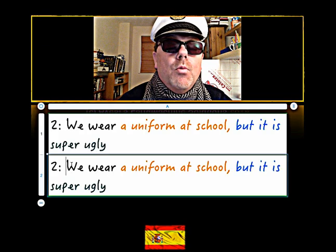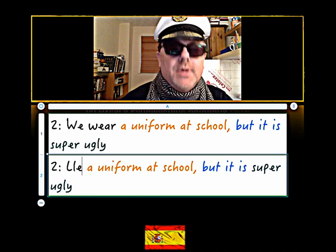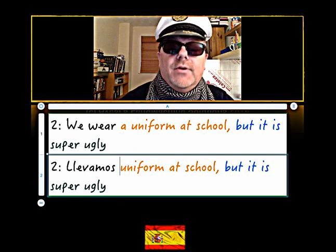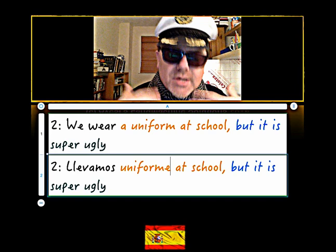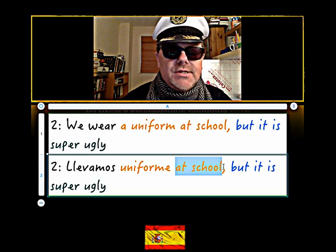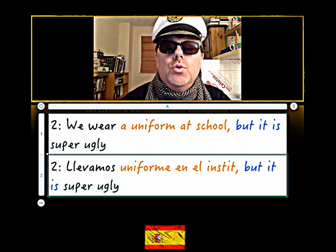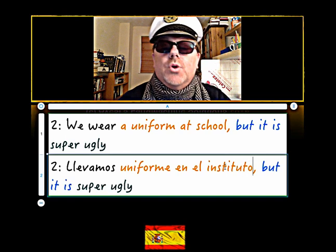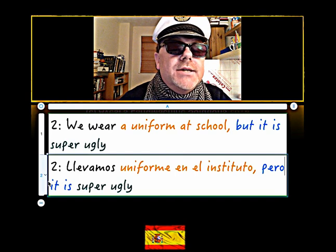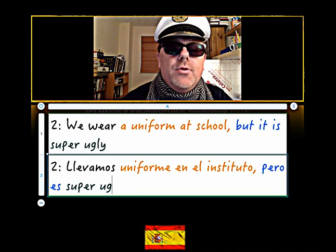Number two. Now 'we wear' - so 'llevar' is to wear, so 'llevamos'. The 'we' form. Then 'uniforme' - get rid of that - 'uniforme'. So 'llevamos uniforme' and then 'at school'. We can use 'instituto' here - 'en el instituto'. Now it is - 'es' - and then 'superfeo' means super ugly.